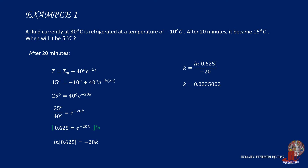At this point, it is better to keep a long list of decimals for K as it is an exponent and a little rounding off can matter a lot in the answer. The modified equation is now taken as T is equal to negative 10 degrees plus 40 degrees times E raised to negative 0.0235002 times t.